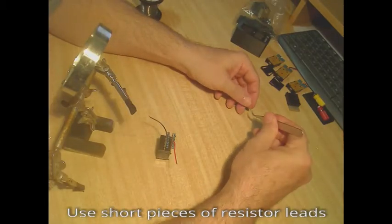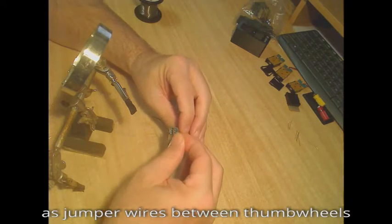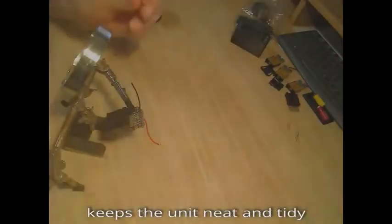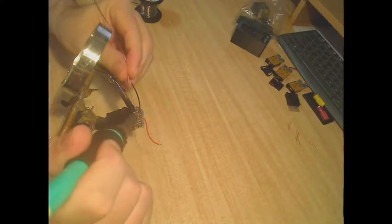I used short pieces cut from the resistor leads as jumper wire between thumb wheels to be ganged together. This keeps the unit neat and tidy, and also perhaps helps with minimizing introducing an offset bias in the resistance.